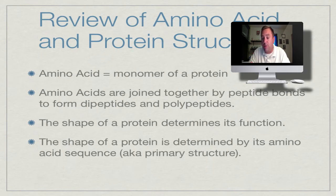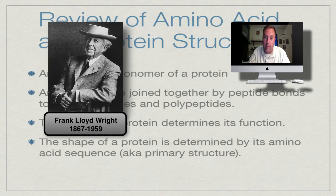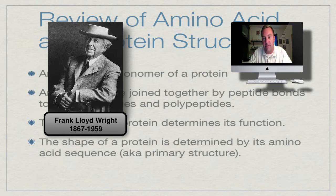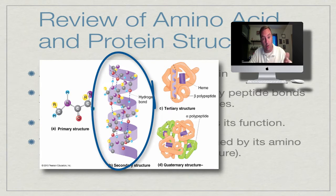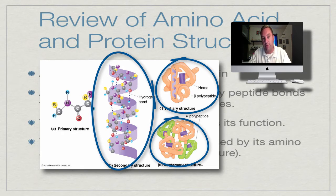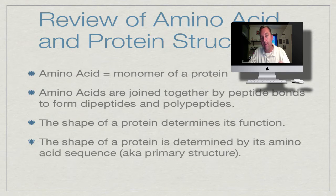A protein's shape is really important — shape determines function. Remember Frank Lloyd Wright: form follows function. The shape of a protein is determined by its amino acid sequence, which is known as the primary structure. Secondary structure is a coil or a fold. Tertiary and quaternary structures are the three-dimensional ones, where function really comes in. The primary structure determines secondary, tertiary, and quaternary structure.